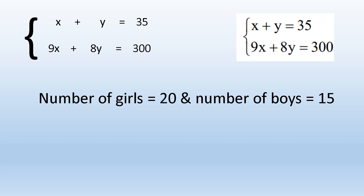So X was 20 and Y equals 15. We can deduce that the number of girls is 20 and the number of boys is 15, and we are done. Bye-bye!